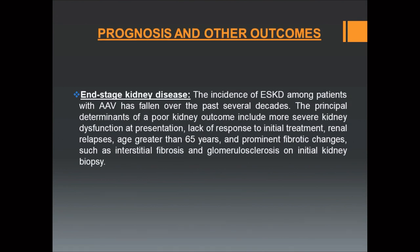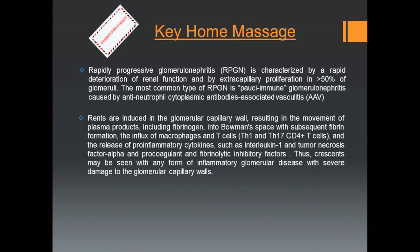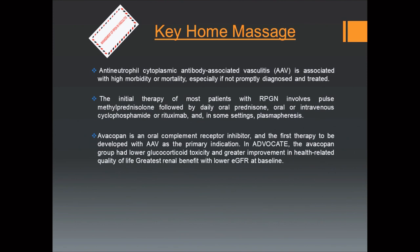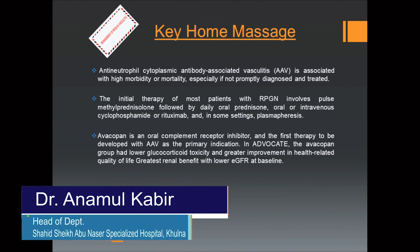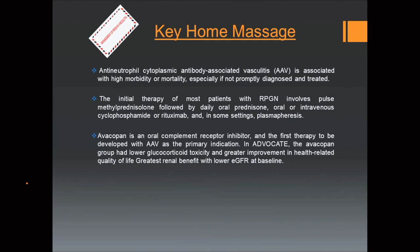The incidence of ESKD among patients with ANCA-associated vasculitis has fallen over recent decades. The principal determinant of poor kidney outcome is more severe kidney dysfunction at presentation. Key points: RPGN is characterized by rapid deterioration of renal function and disruption in the glomerular capillary wall. ANCA-associated vasculitis carries high mortality and morbidity; initial therapy involves pulse methylprednisolone followed by oral or IV cyclophosphamide or rituximab. Avacopan is an oral complement receptor inhibitor and the first therapy developed with ANCA-associated vasculitis as primary indication. In the ADVOCATE study, the avacopan group had lower glucocorticoid toxicity, greater improvement in health-related quality of life, and greatest renal benefit at lower GFR baseline.